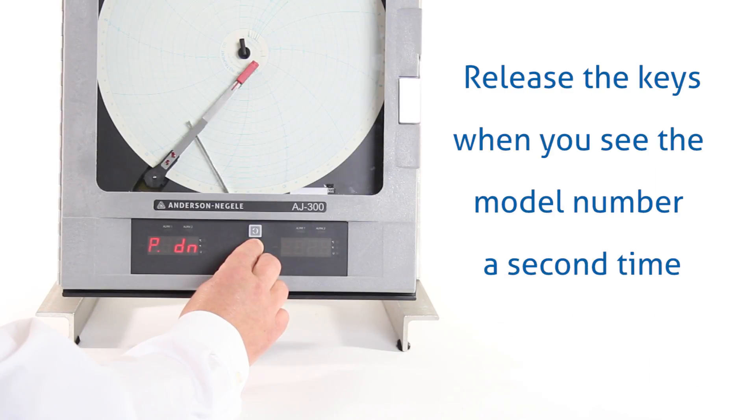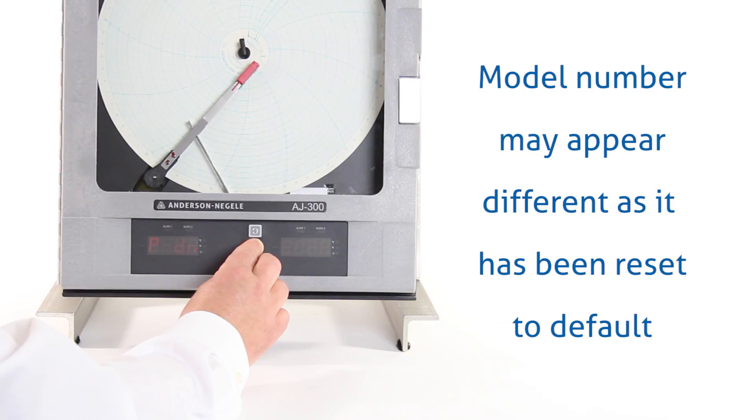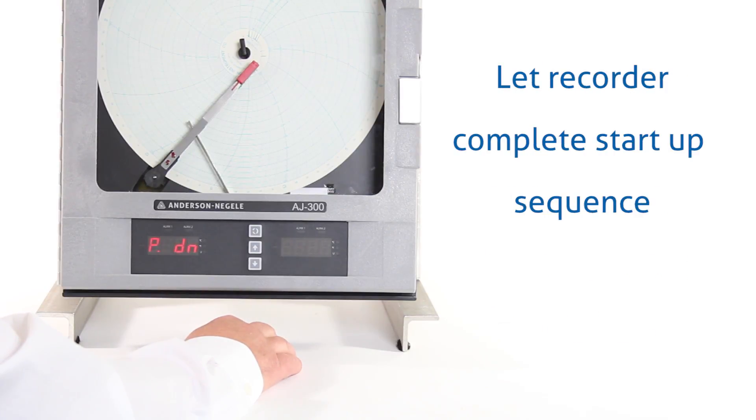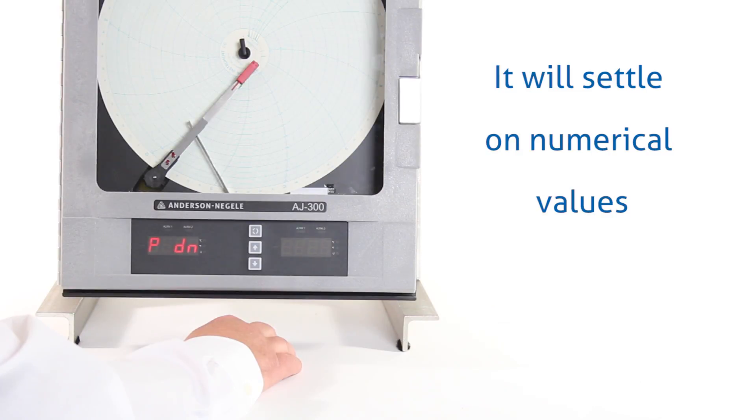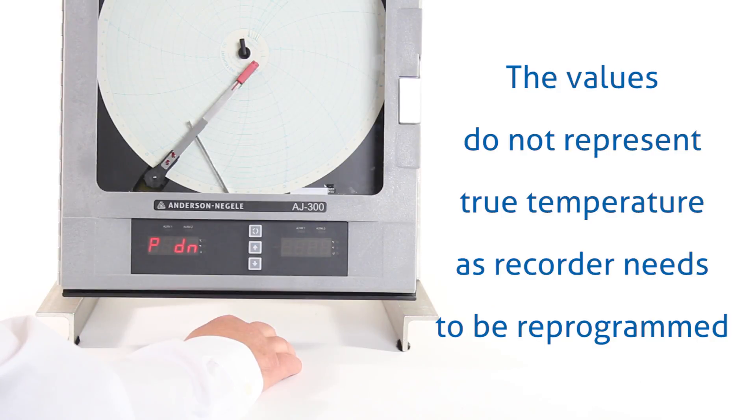Once it comes up a second time, you can release the keys. When the model number comes up a second time, it may appear differently as it's reset to the default model number. You can continue to let the recorder go through its startup sequence and eventually it's going to settle out on some values. The values on the display are not going to represent the true temperature at this time as the recorder will need to be reprogrammed.